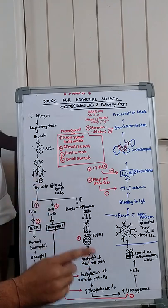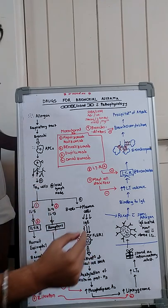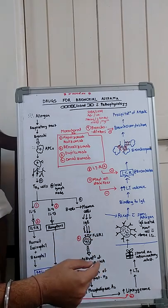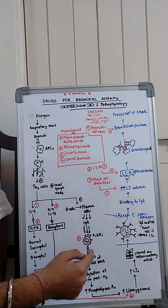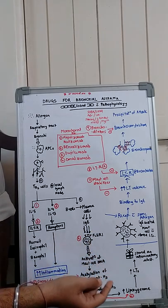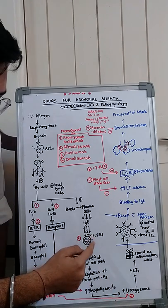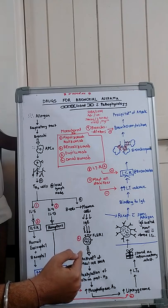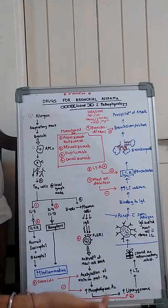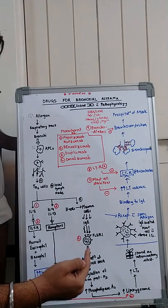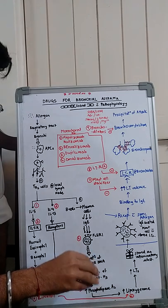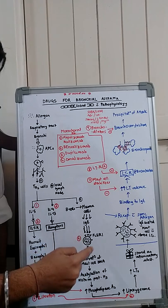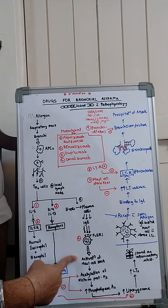These IgE antibodies bind to a cell that has the FC receptor for IgE. The FC region is the lower part of the Y-shaped antibody structure. This FC receptor is present on specialized cells known as mast cells, which are derived from B cells.